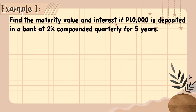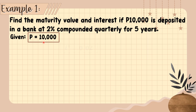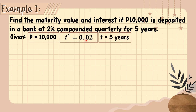The 10,000 pesos is compounded at 2% quarterly, meaning it is compounded 4 times a year. So our given values are: principal P = 10,000 pesos; I sub 4 = 0.02 (quarterly, so M = 4); and T = 5 years. Now let's find the maturity value and compound interest.